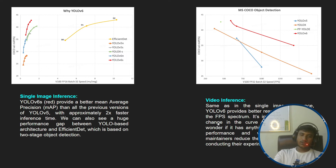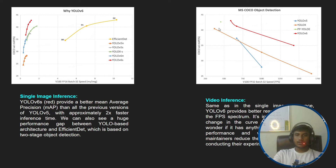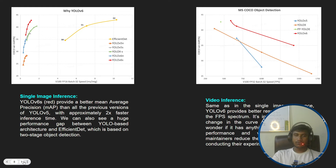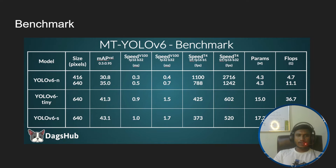For video inference, same as in single image inference, YOLOv6 provides better results across all FPS spectrums. The red line representing YOLOv6 shows it is quite fast and also achieves high mean average precision. This was the benchmark comparison between various YOLO series models.